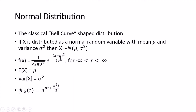The probability density function for a normally distributed random variable f(x) is one over the square root of two pi sigma squared, times e to the negative (x minus mu) squared over two sigma squared. There are other ways you can rewrite this, but this form is useful to remember: one over square root of two pi sigma squared, e to the negative (x minus mu) squared over two sigma squared, valid for values of x from negative infinity to positive infinity.